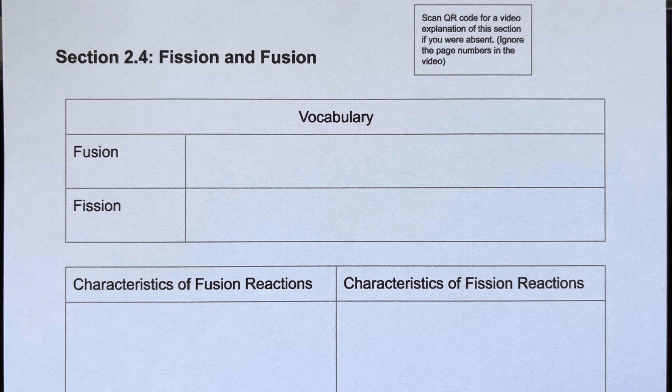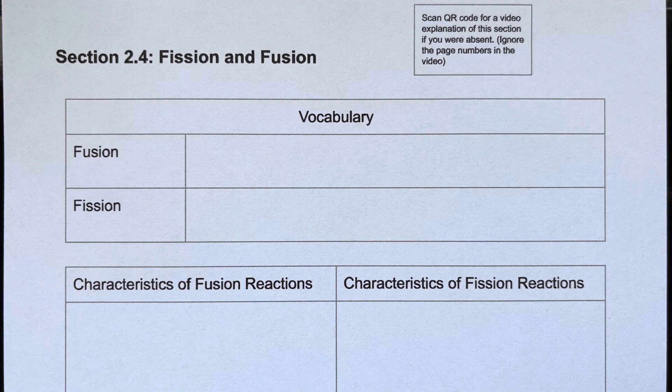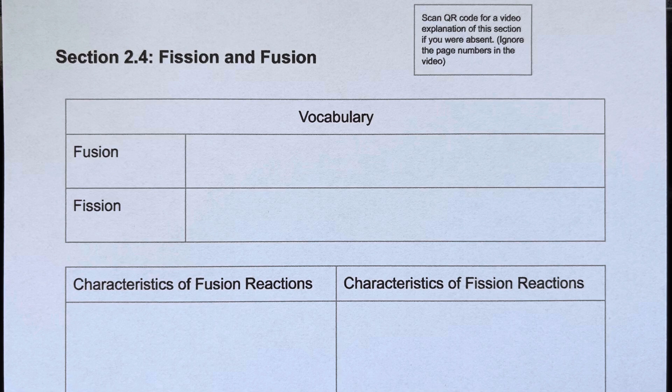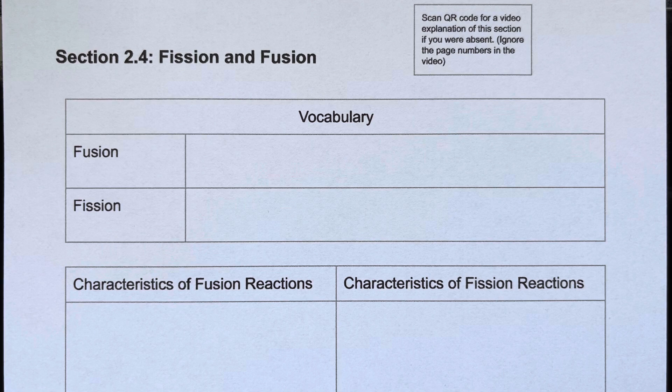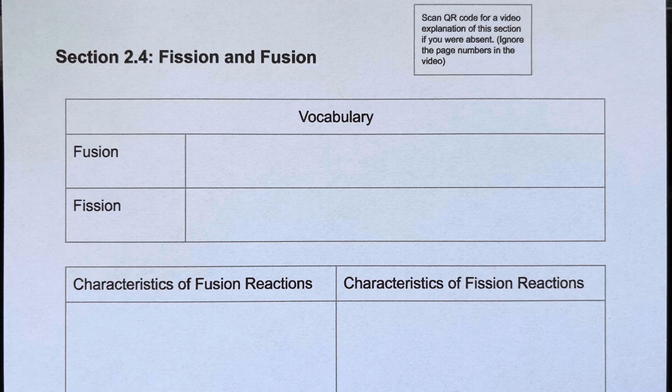They're different than radioactive decay such as alpha, beta, positron. They are a lot more energetic and can be used both for destructive purposes and also for energy purposes. So let's talk about the difference between them first.